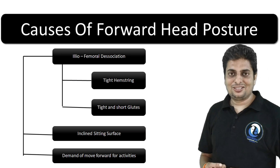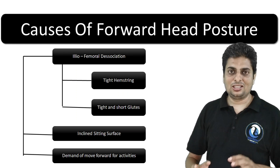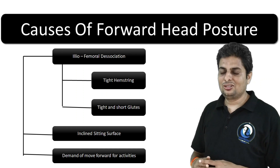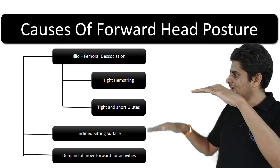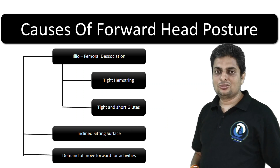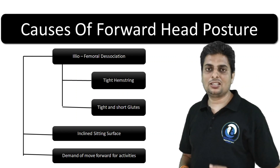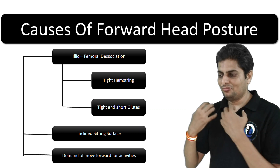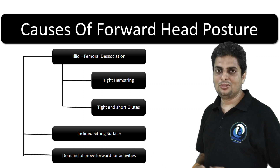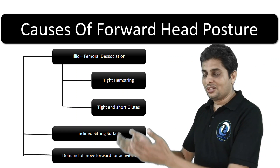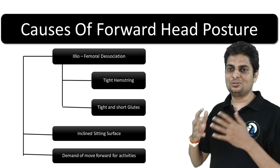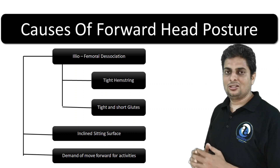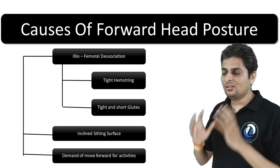The second important sitting factor is a wrong sitting surface or incorrect chair. If the chair is inclined — higher on the knee side and lower at the back — this inclined sitting can further increase the problem.